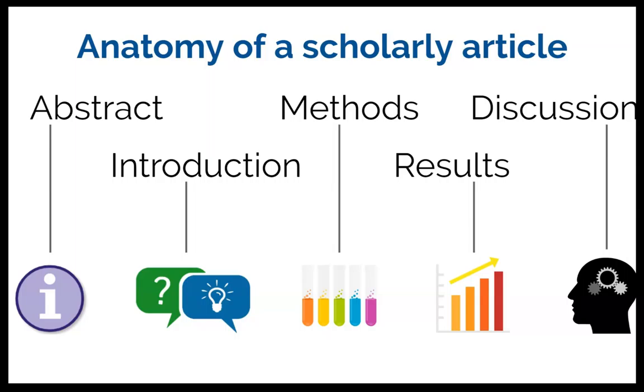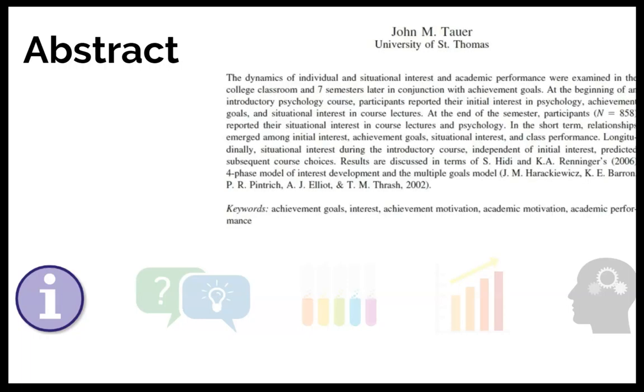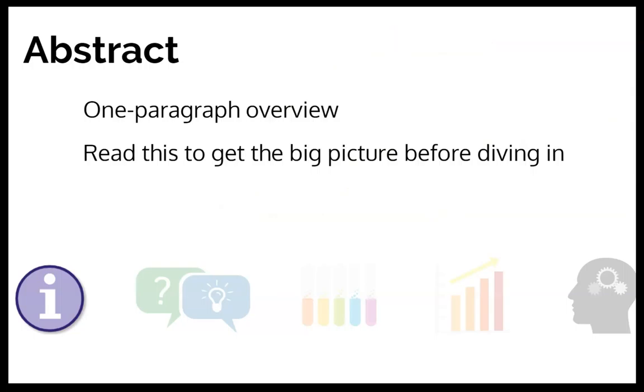They're almost always going to start with an abstract, which is a one-paragraph overview of what this study is all about. So here we have an example of one from a psychology journal. This is the author telling you what they think are the highlights from their article. Obviously you don't want to rely solely on this, but it does give you a good overview. I always recommend that you read this before you jump into the article itself, because this gives you a sense of where are we going with all of this and what should I be looking for.